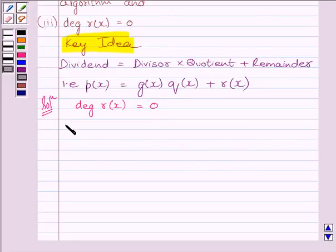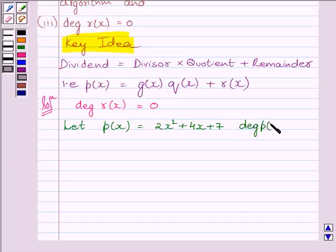Let Px equal 2x squared plus 4x plus 7. Here, the degree of Px is equal to 2.